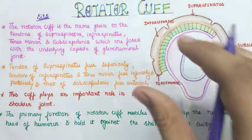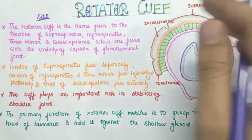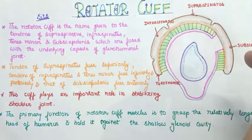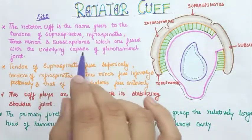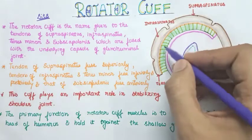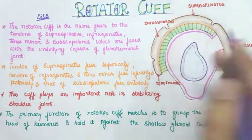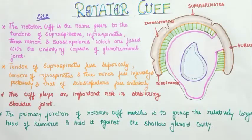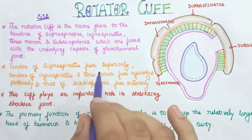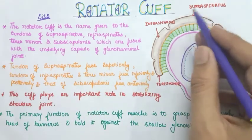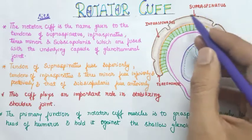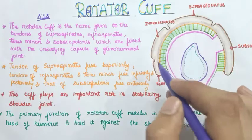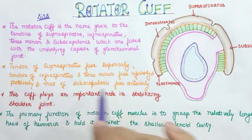The first point to remember about how the rotator cuff is formed: it is nothing but the fused tendons of the supraspinatus, infraspinatus, teres minor, and subscapularis — fused with the underlying capsule of the glenohumeral joint. The second point: the tendon of the supraspinatus fuses superiorly, the infraspinatus and teres minor fuse posteriorly and somewhat inferiorly, and anteriorly we have the subscapularis muscle.